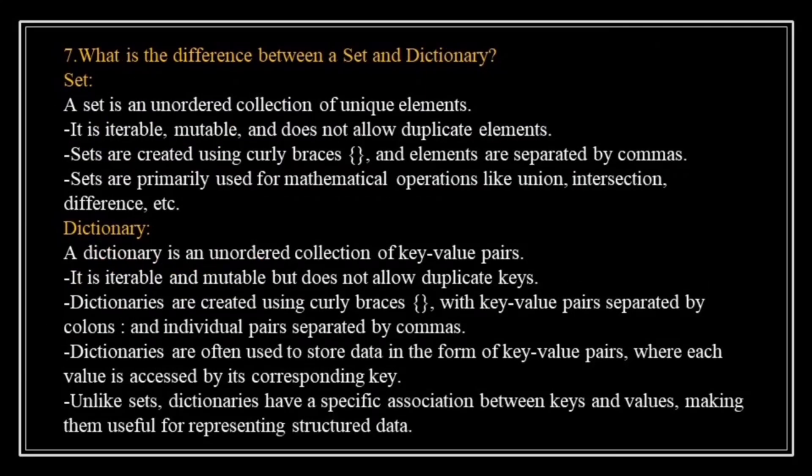What is the difference between a set and a dictionary? A set is an unordered collection of unique elements. It is iterable, mutable, and does not allow duplicate elements. Sets are created using curly braces with elements separated by commas. Sets are primarily used for mathematical operations like union, intersection, difference, etc. A dictionary is an unordered collection of key-value pairs. It is iterable and mutable but does not allow duplicate keys. Dictionaries are created using curly braces with key-value pairs separated by a colon and individual pairs separated by commas. Dictionaries are used to store data in key-value pairs where each value is accessed by its corresponding key. Unlike sets, dictionaries have a specific association between keys and values, making them useful for representing structured data.